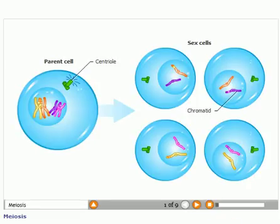In meiosis, one chromosome division and two cell division stages occur, resulting in four sex cells from one parent cell, each with half the number of chromosomes.